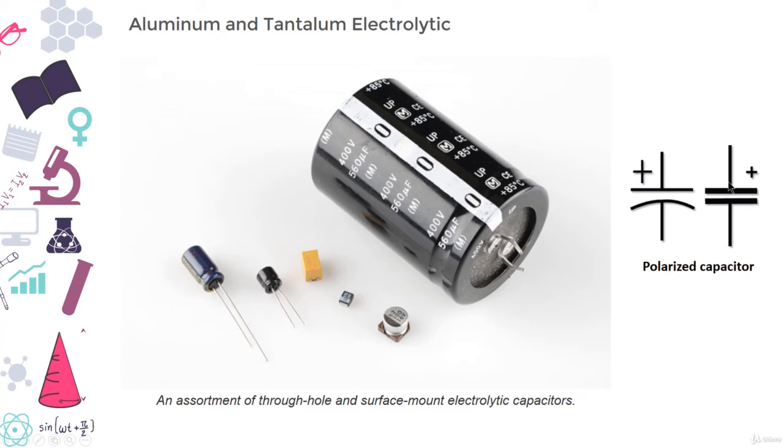Unfortunately, electrolytic capacitors are usually polarized, so they have a positive pin, the anode, and a negative pin called the cathode. When voltage is applied to an electrolytic capacitor, the anode must be at a higher voltage than the cathode.